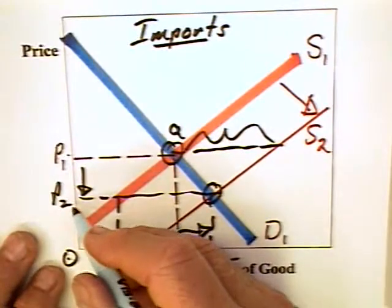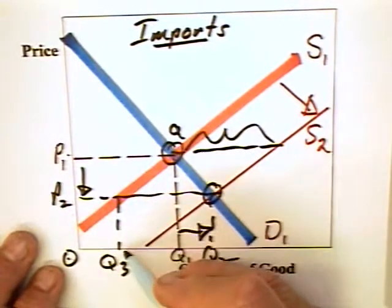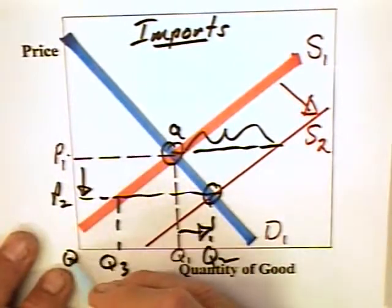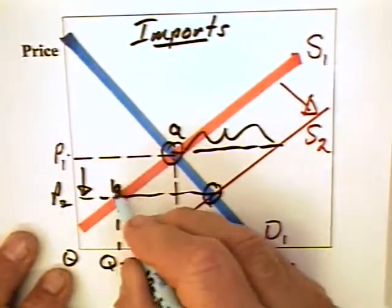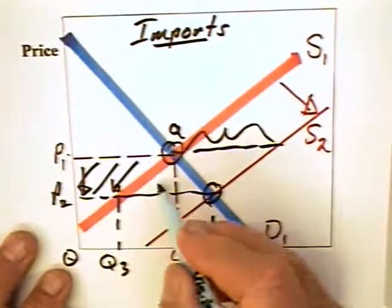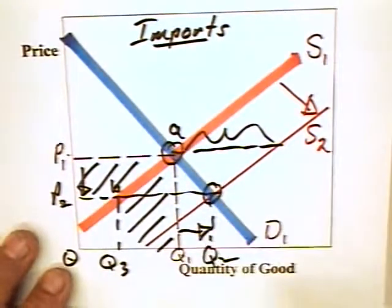Now this means that the domestic producers who have to compete with imports once had a revenue equal to P1 times Q1 or 0, P1, A, Q1. Now with the imports, the price goes to P2. Domestic producers produce Q3. Their revenues go to 0, P2, B, Q3. They lose revenue equal to this area here.